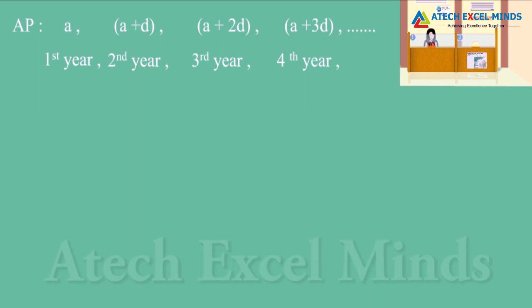If we look at this AP series, we find terms A, A plus D, A plus 2D, A plus 3D for the first year, second year, third year, and fourth year respectively.